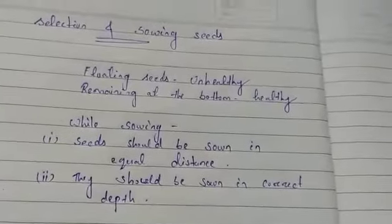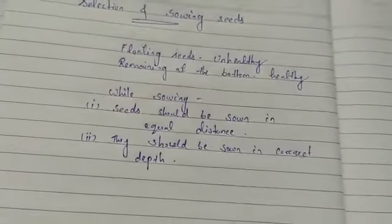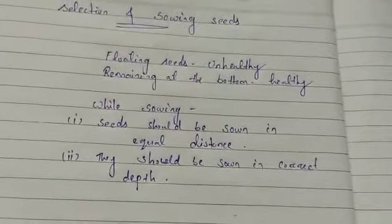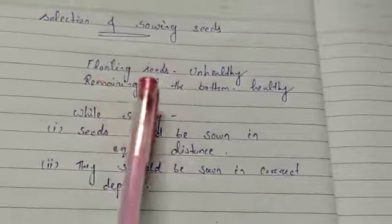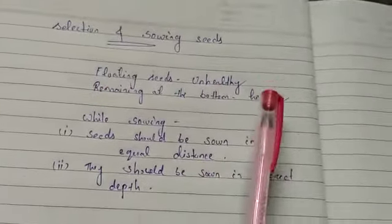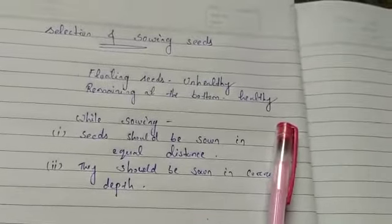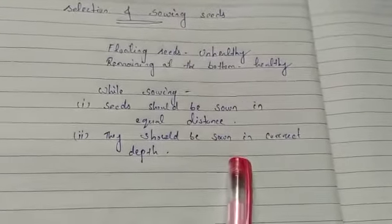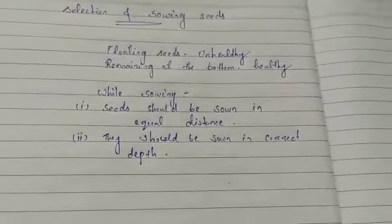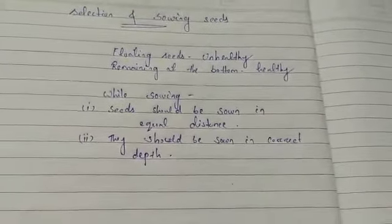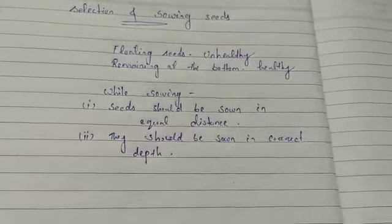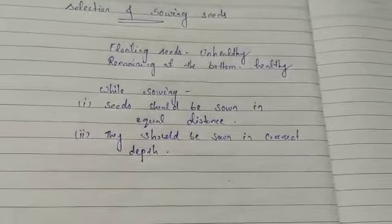To recap: first we select seeds using a container filled with water — floating seeds are unhealthy and seeds that sink to the bottom are healthy. While sowing, two main things to consider are that seeds should be at equal distance from each other, and they should be sown at the correct depth.